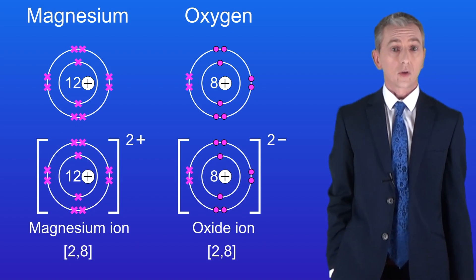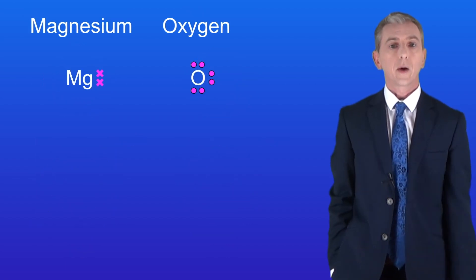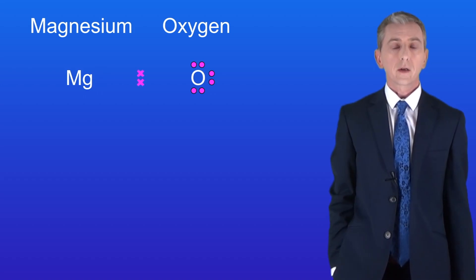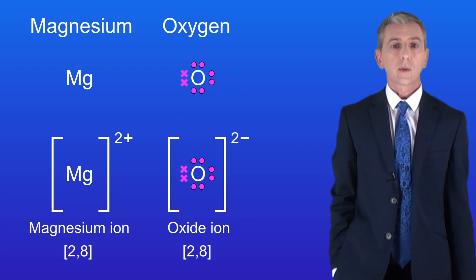We can show this reaction using a dot and cross diagram like this where we only show the outer energy levels. So again here are the 2 electrons moving from the magnesium atom to the oxygen atom producing the magnesium and oxide ions.